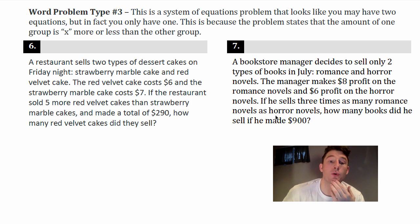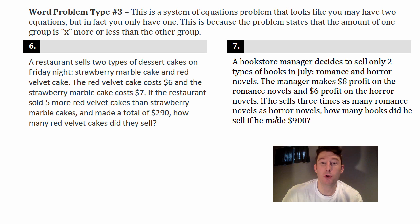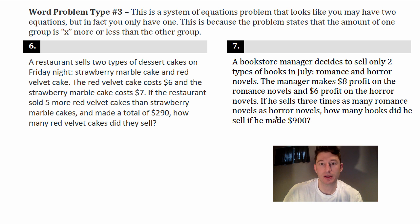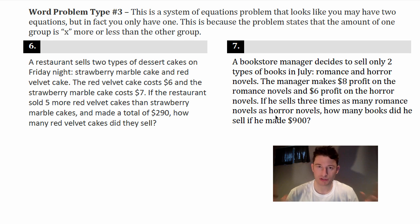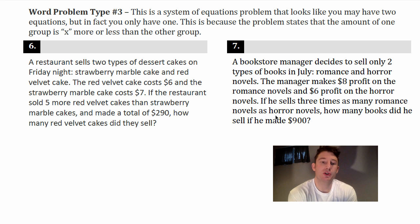The third type of systems word problem has key words like 'one variable is 30 more than the other' or 'one variable is four times as much as the other.' You still need two equations, but one variable relates directly to the other, and you solve using substitution. Let's look at an example.